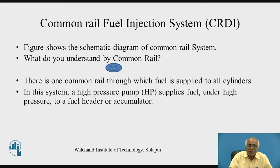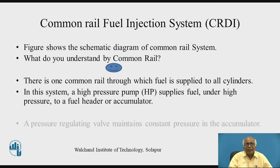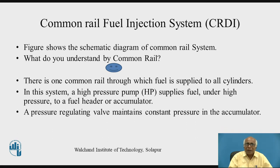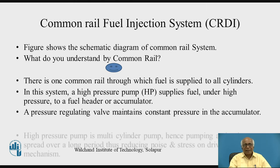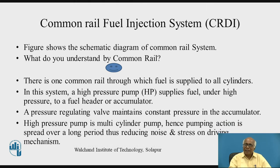In this system, a high-pressure pump supplies fuel under high pressure to a fuel header or accumulator — that is the Common Rail. A pressure-regulating valve maintains constant pressure in the accumulator. The high-pressure pump is a multi-cylinder pump; hence, the pumping action is spread over a long period, thus reducing noise and stress of driving the pump. We shall discuss this point again in detail.